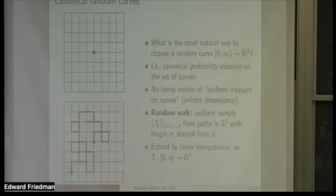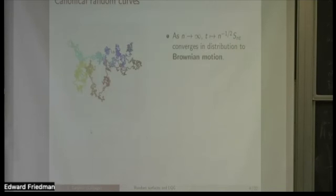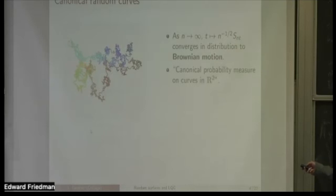We can view the random walk as a continuous curve in R2 by extending it via linear interpolation, so it traverses each edge at unit speed. We can ask whether these continuous curves have some sort of limit as the number of steps goes to infinity. If we rescale space by n^{-1/2} and rescale time by n, then these random walk paths converge in distribution with respect to the uniform topology to a limiting random path called Brownian motion. Brownian motion is the canonical model of random paths in R2.